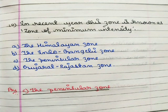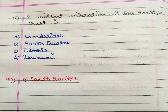Next question: in recent years, this zone is known as the zone of minimum intensity. Option A the Himalayan zone, option B the Indo-Gangetic zone, option C the peninsular zone, option D Gujarat-Rajasthan zone. The correct answer is option C the peninsular zone.